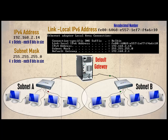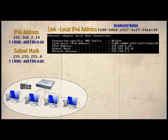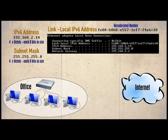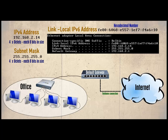For example, if you are working within an office LAN and wish to access the outside world such as the internet, then your host will require details of the LAN's default gateway. Usually this is in the form of a router which can direct the traffic out to the internet.